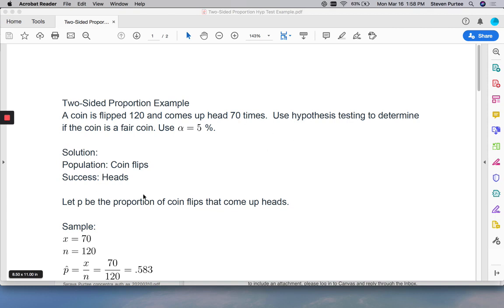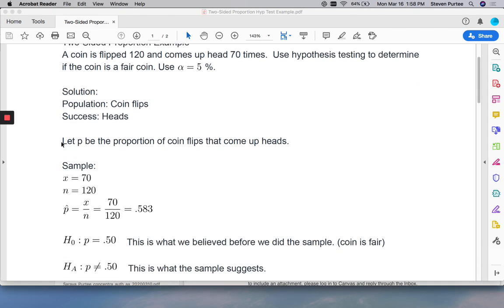So first we decide our population and success. The population is all the different coin flips we could get. We decided, or I decided, to call getting heads success. We could have easily done tails. So we must write this step as required. Let P be the proportion of the population that is successful.